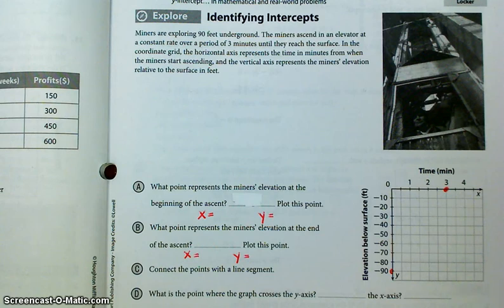Lesson 5.2, Module 5, Lesson 2, is about identifying intercepts, and that would be where a line on a graph intersects the x-axis or the y-axis.